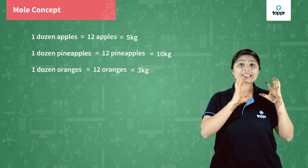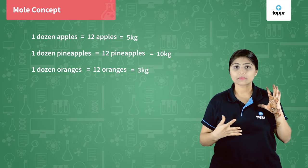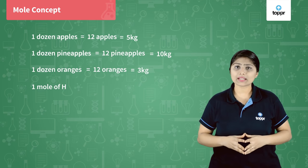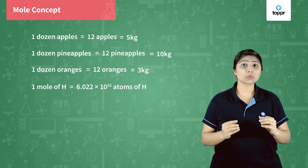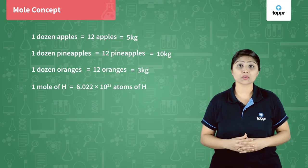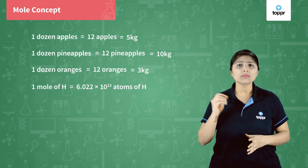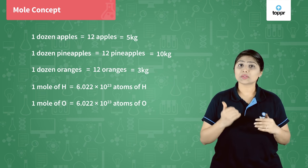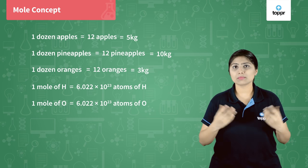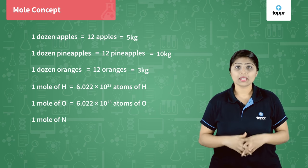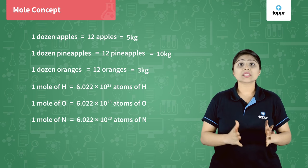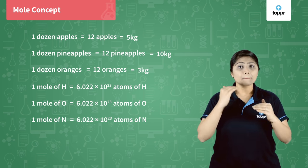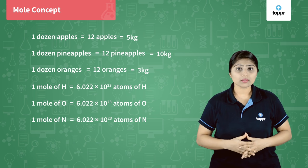Now the same concept we can use while finding moles. If I tell you I need one mole of hydrogen, how many hydrogen atoms will it have? It will have 6.022 × 10²³ atoms of hydrogen. But if I tell you I want one mole of oxygen, how many oxygen atoms will it have? It will have 6.022 × 10²³ atoms of oxygen. Similarly, if I tell you I want one mole of nitrogen, it will contain 6.022 × 10²³ atoms of nitrogen. But will the mass of all these atoms be equal? No.